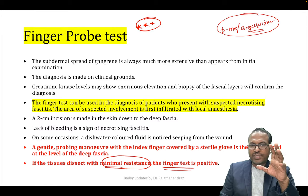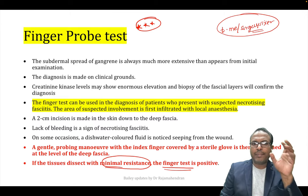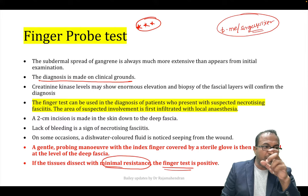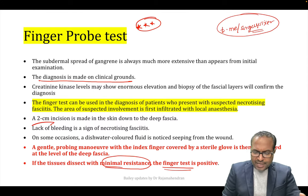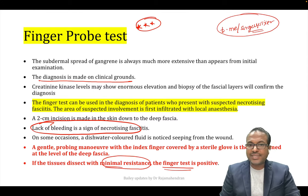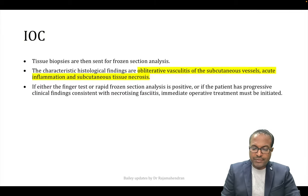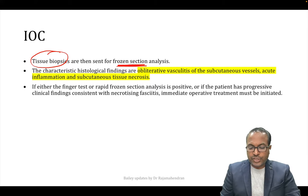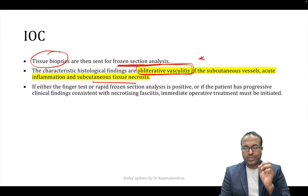The most important update is that the finger probe test is positive. Lack of bleeding is also a sign because all vessels are thrombosed. Dishwater-colored pus is coming out. The most important investigation of choice is tissue biopsy sent for frozen section analysis, which shows obliterative vasculitis — the vessels get obliterated, causing subcutaneous necrosis.